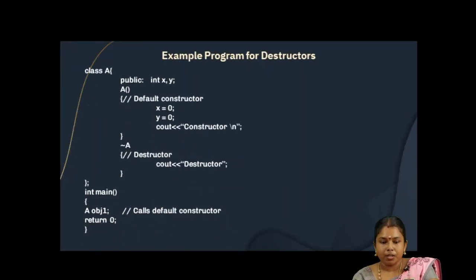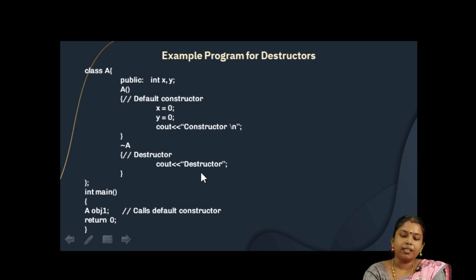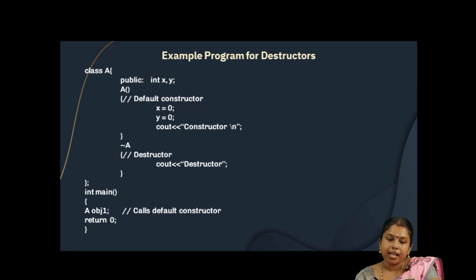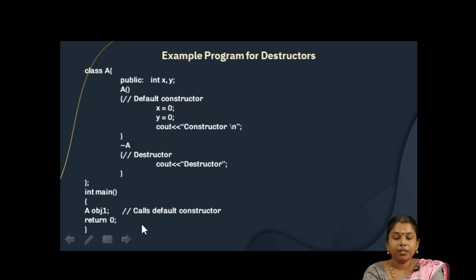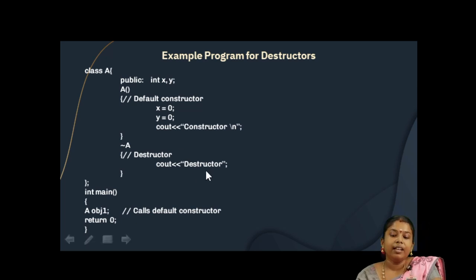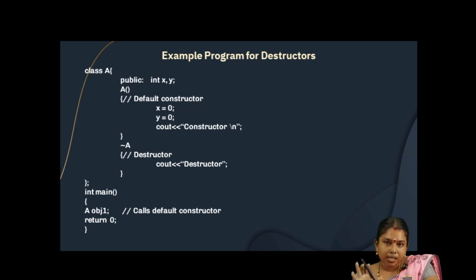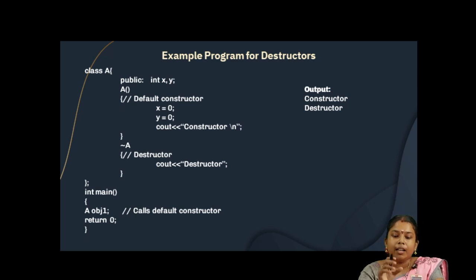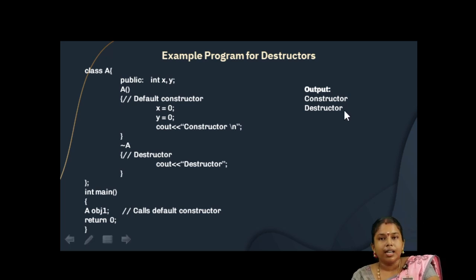Here is an example for Destructor. We define a Default Constructor and a Destructor method. During OBJ1 object creation, it contains no parameters, so the Default Constructor is invoked, initializing X and Y with 0 and printing a statement as 'Constructor'. Then in the main function, there are no more statements to execute, so OBJ1 loses its scope and the compiler automatically invokes the Destructor method, which prints a statement as 'Destructor'.